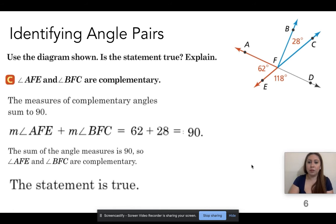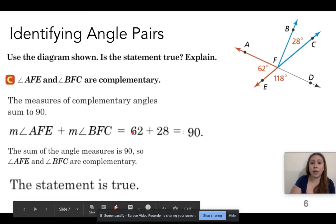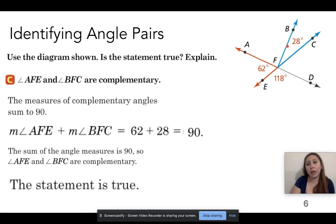That doesn't matter, but because both of the angles, once I put them together, equal 90 degrees, then it is complementary. All right, so again, it is complementary because if I add them, it gives me 90, even though they're not right next to each other. It doesn't matter as long as when I add them together it gives me 90 degrees.